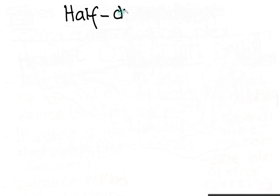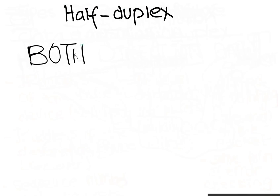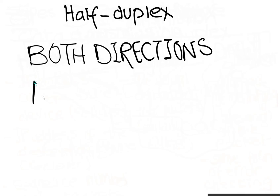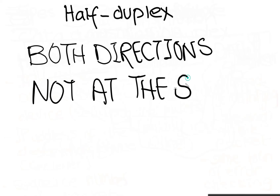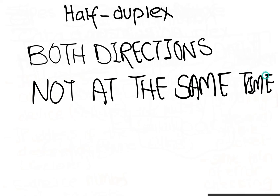Half-duplex mode occurs when data is sent in both directions, but not at the same time. For example, data can be sent from A to B and from B to A along the same transmission line, but they can't both be done at the same time. An example of this would be a walkie-talkie, where a message can be sent in one direction only at a time, but messages can be both received and sent.